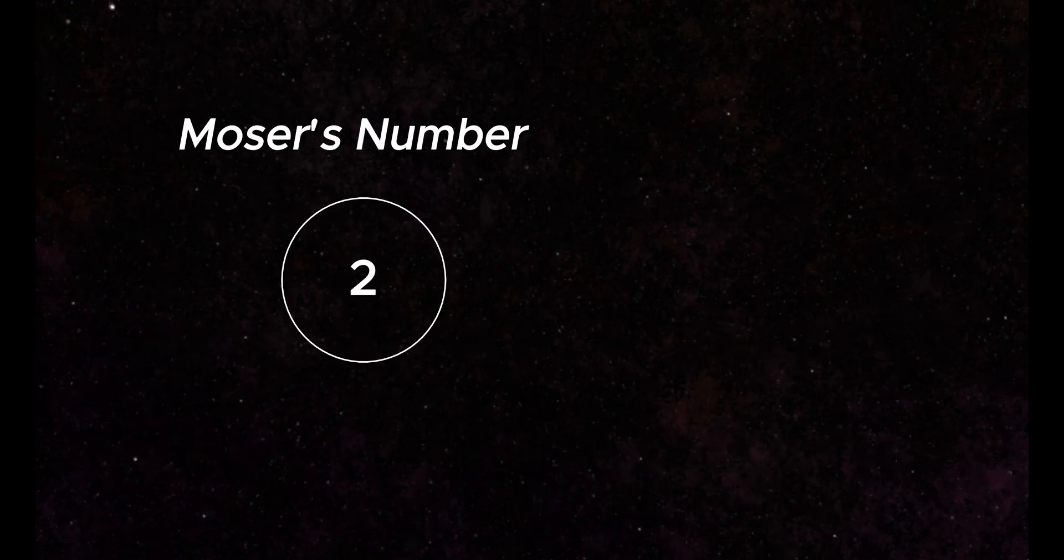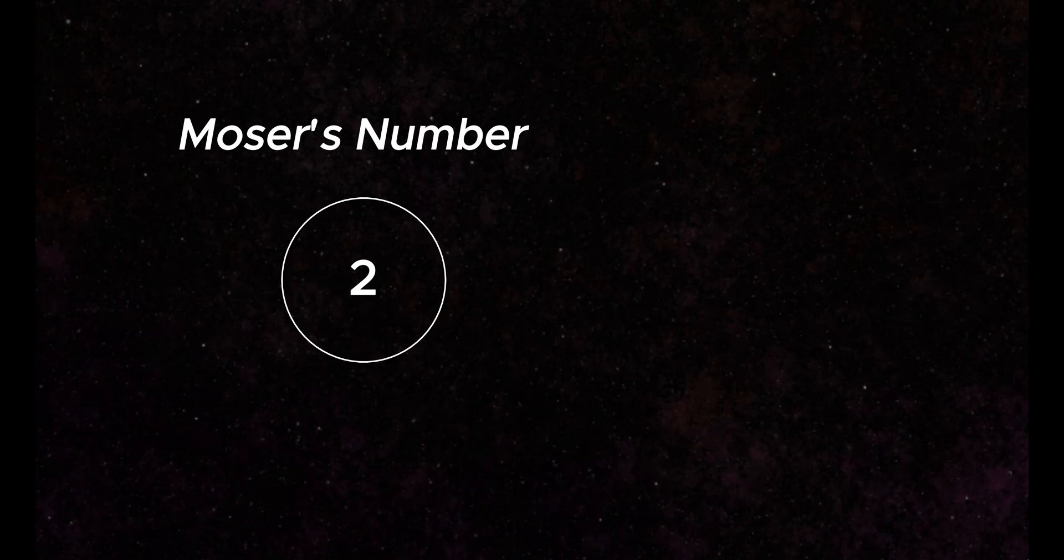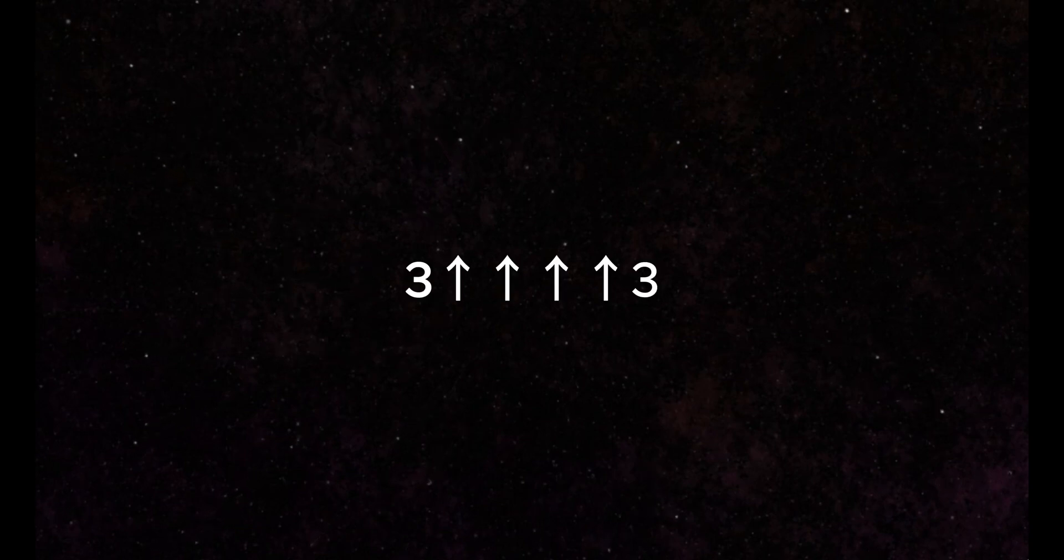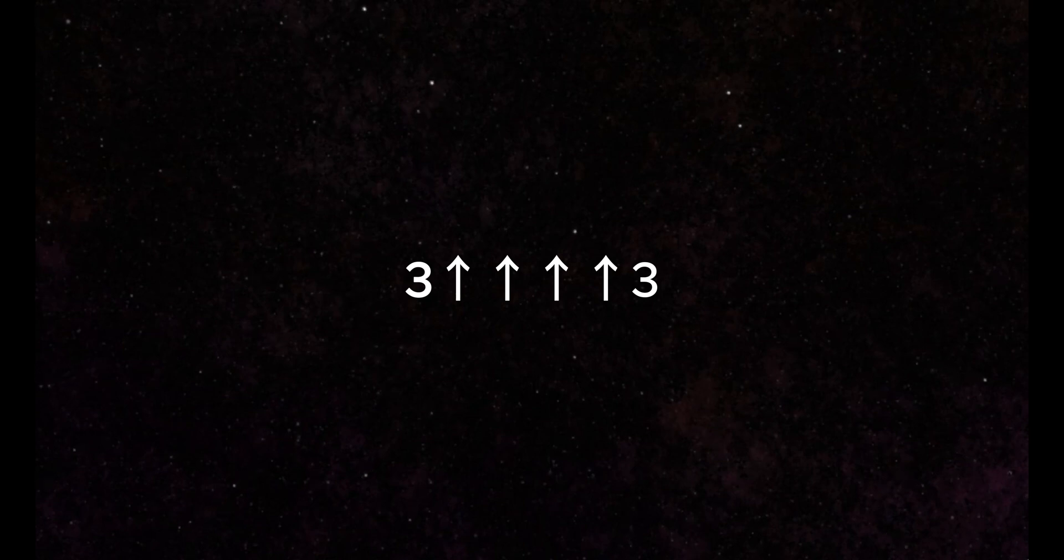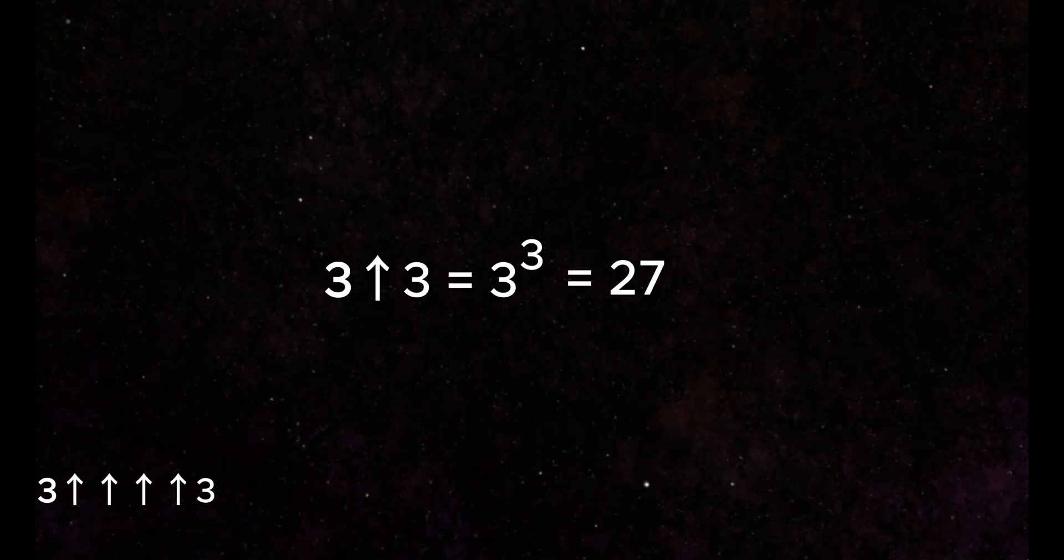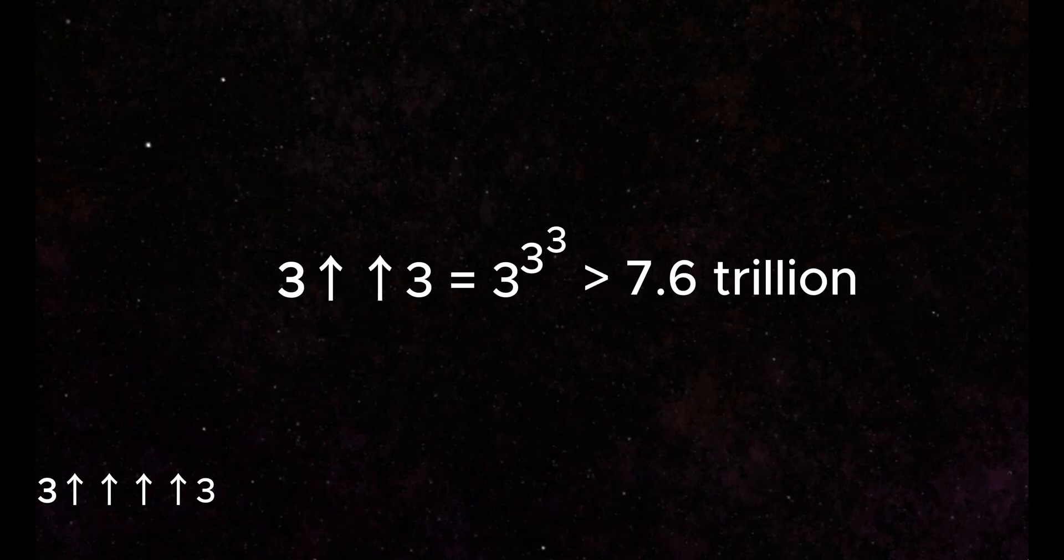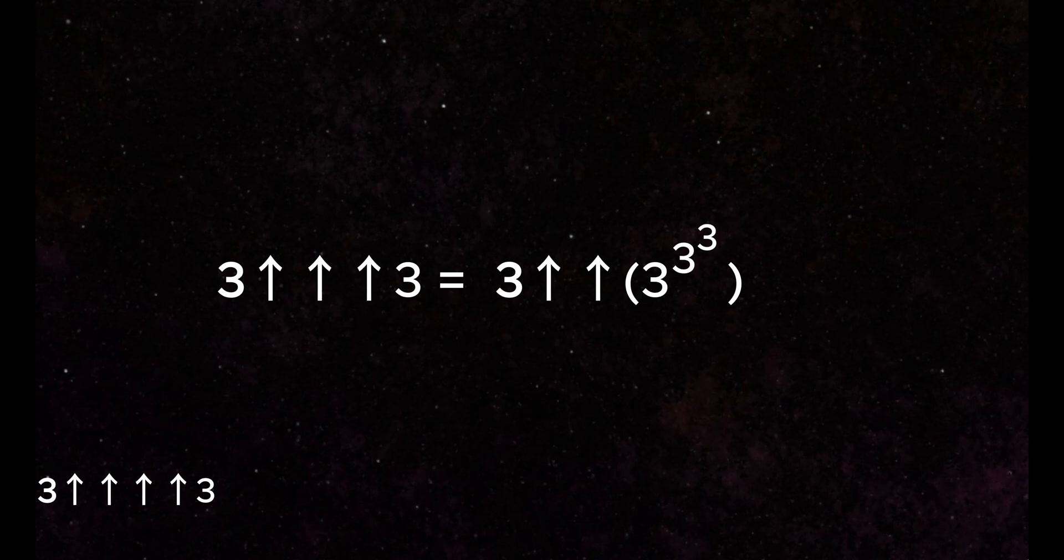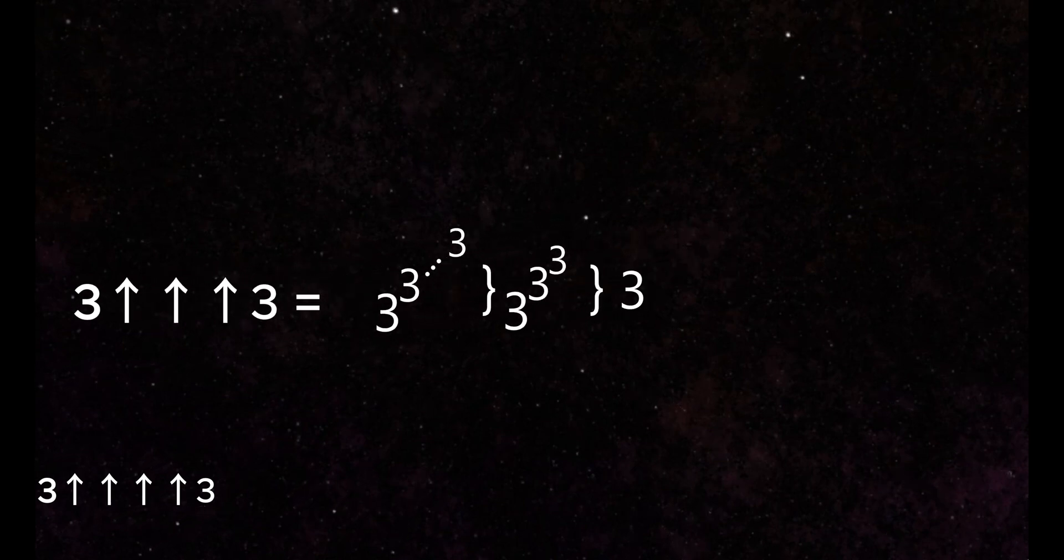Let's start using this notation now to describe Moser's number. First, let us define an initial number, 3 quadruple arrow 3. How large is this quadruple arrow structure? 3 arrow 3 equals 27, while 3 double arrow 3 is approximately equal to 7.6 trillion.